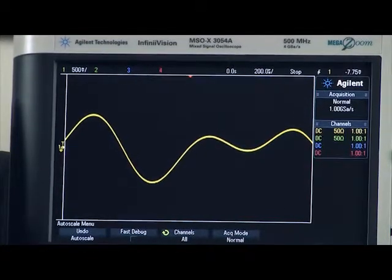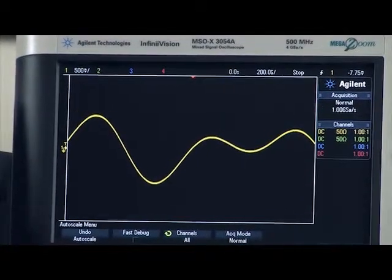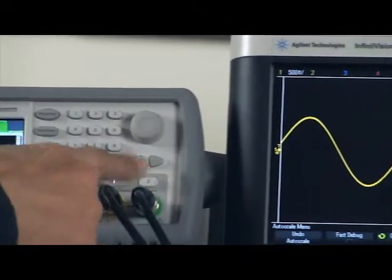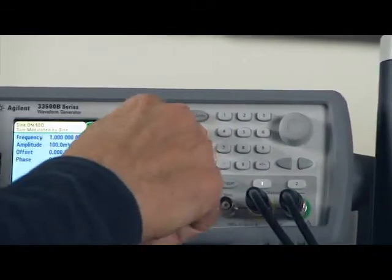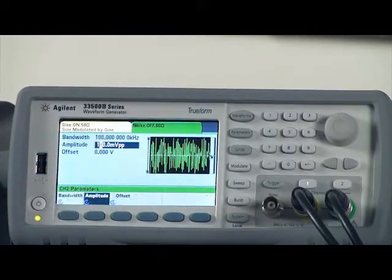Now let's put some additive noise onto here. We do that by using channel two. We'll turn on the noise. The noise is set at 100 millivolts peak to peak. That's at about 10% of where the dual-tone is. So let's leave it there to start with.